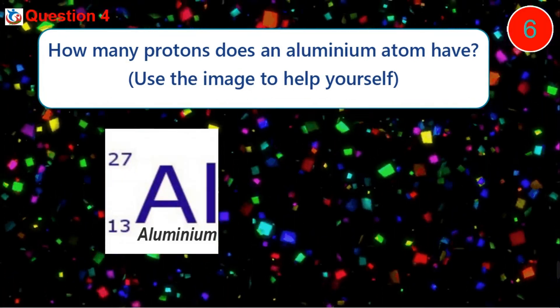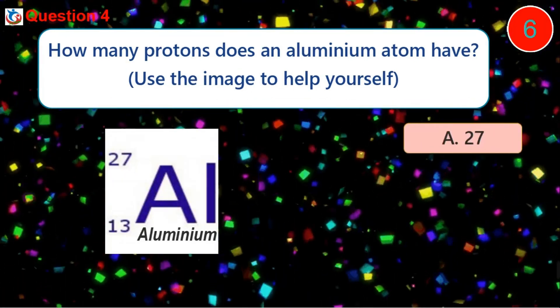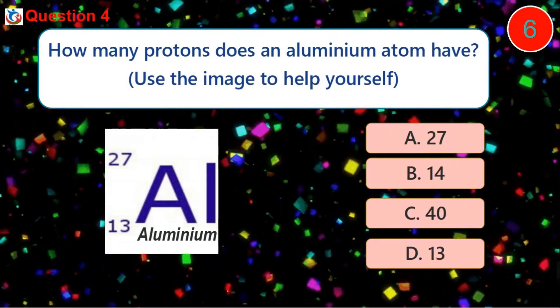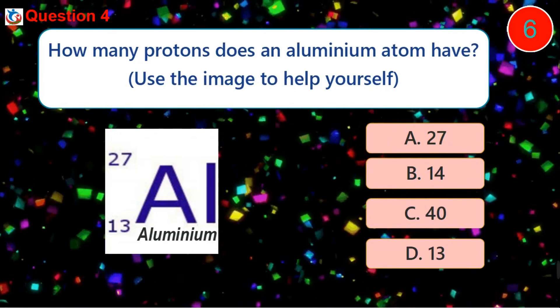Question 4. How many protons does an aluminum atom have? A. 27 B. 14 C. 40 D. 13.